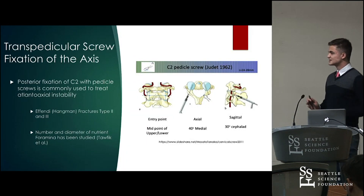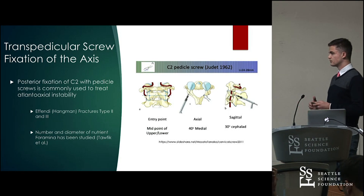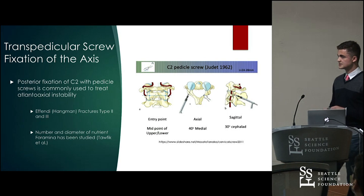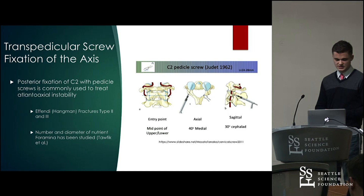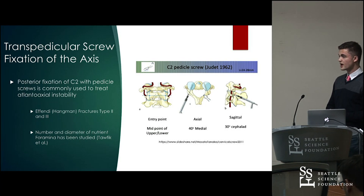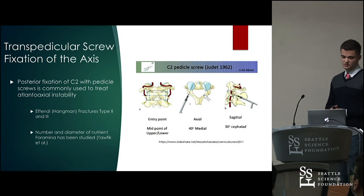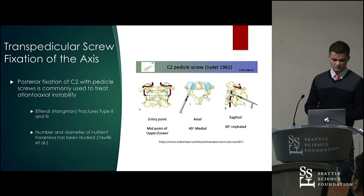I want to give a little background information about C2 pedicle screw placement, or transpedicular screw fixation. The nutrient foramina may be useful for this kind of fixation, and thus the deep cervical artery as it relates to nutrient foramina may be important. Posterior fixation of C2 with pedicle screws is still commonly used to treat atlantoaxial instability. Specifically, transpedicular screw fixation is commonly used to deal with Fendi fractures, which are fractures in which the pedicles bilaterally on C2 are fractured superiorly to inferiorly. Fendi fractures are also commonly known as hangman fractures, and posterior fixation using pedicle screws is commonly used in types two and three, the unstable fracture variants.